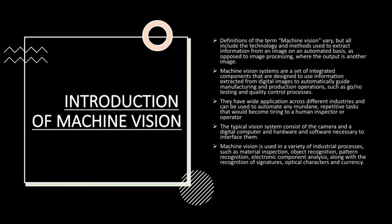Let us begin with the introduction of machine vision. The definition of the term machine vision varies, but all include the technology and methods used to extract information from an image on an automated basis, as opposed to image processing where the output is another image.